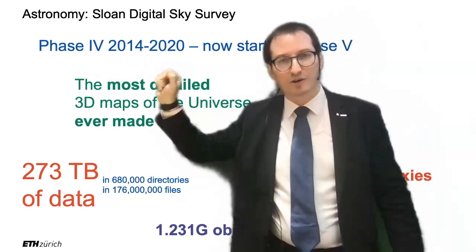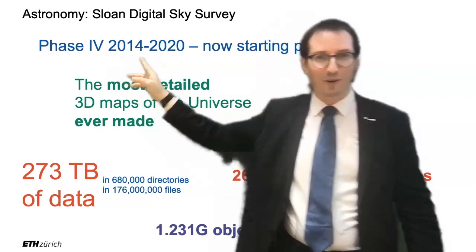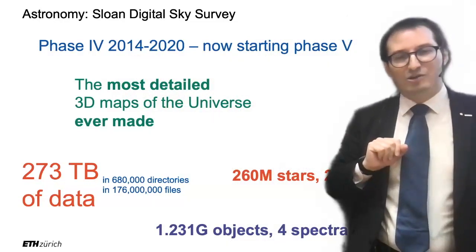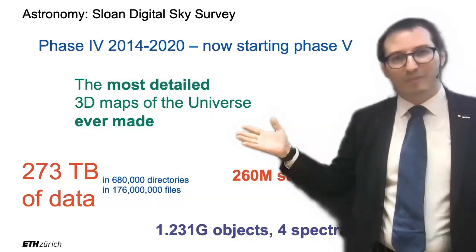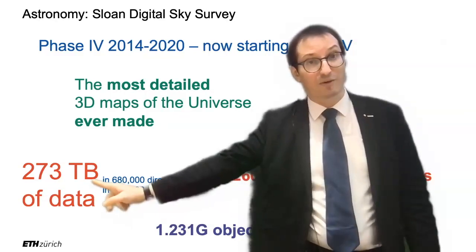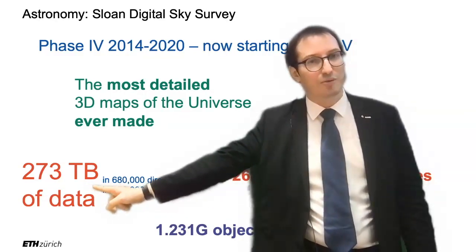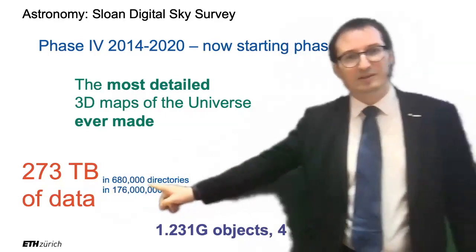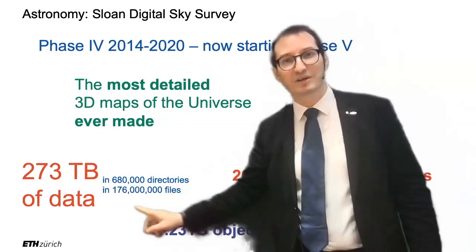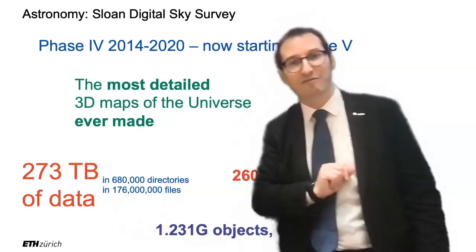Phase 4 completed just three years ago, and now we are in Phase 5. I looked up how much data Phase 4 was, and it turns out this is 273 terabytes of data — 680,000 directories and 176 million files.